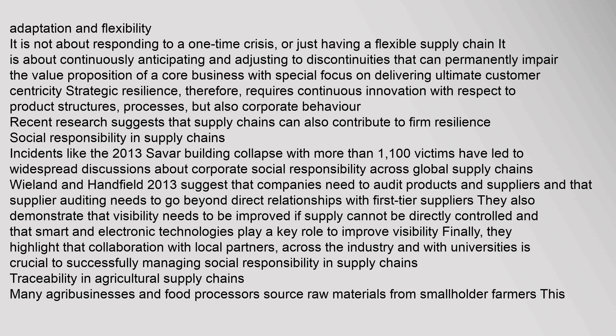Incidents like the 2013 Rana Plaza building collapse, with more than 1,100 victims, have led to widespread discussions about corporate social responsibility across global supply chains. Wieland and Handfield (2013) suggest that companies need to audit products and suppliers, and that supplier auditing needs to go beyond direct relationships with first-tier suppliers. They also demonstrate that visibility needs to be improved if supply cannot be directly controlled, and that smart and electronic technologies play a key role. Collaboration with local partners, across the industry and with universities, is crucial to successfully managing social responsibility in supply chains.